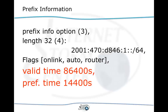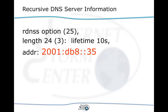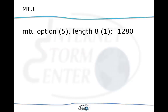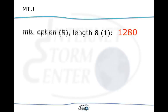There are additional options as well. One option added later but now widely used allows the router advertisement to set a recursive DNS server — something typically done with DHCP in IPv4. In this example the DNS server is 2001:db8::35. Another option advertises the MTU to be used for the network; here an MTU of 1280 is advertised, which is the smallest possible MTU for IPv6. Using 1280 means we will never see fragmentation of our traffic.